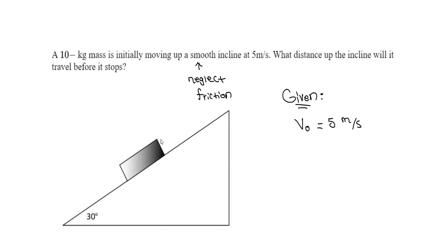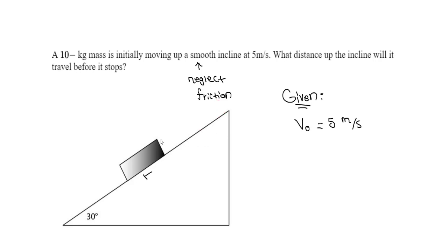We're asked: what distance up the incline will the block travel before it stops? So the 10 kilogram mass is moving up and it's going to stop somewhere up the incline. We want to determine this distance S — the distance it travels before it starts going back down.